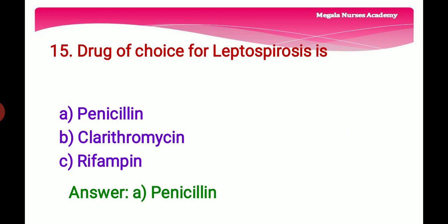Fifteenth question: The drug of choice for leptospirosis — Option A: Penicillin, Option B: Clarithromycin, Option C: Rifampicin. The right answer is Option A, penicillin, because penicillin is the drug of choice for leptospirosis, destroying the spirochetes that cause the disease.